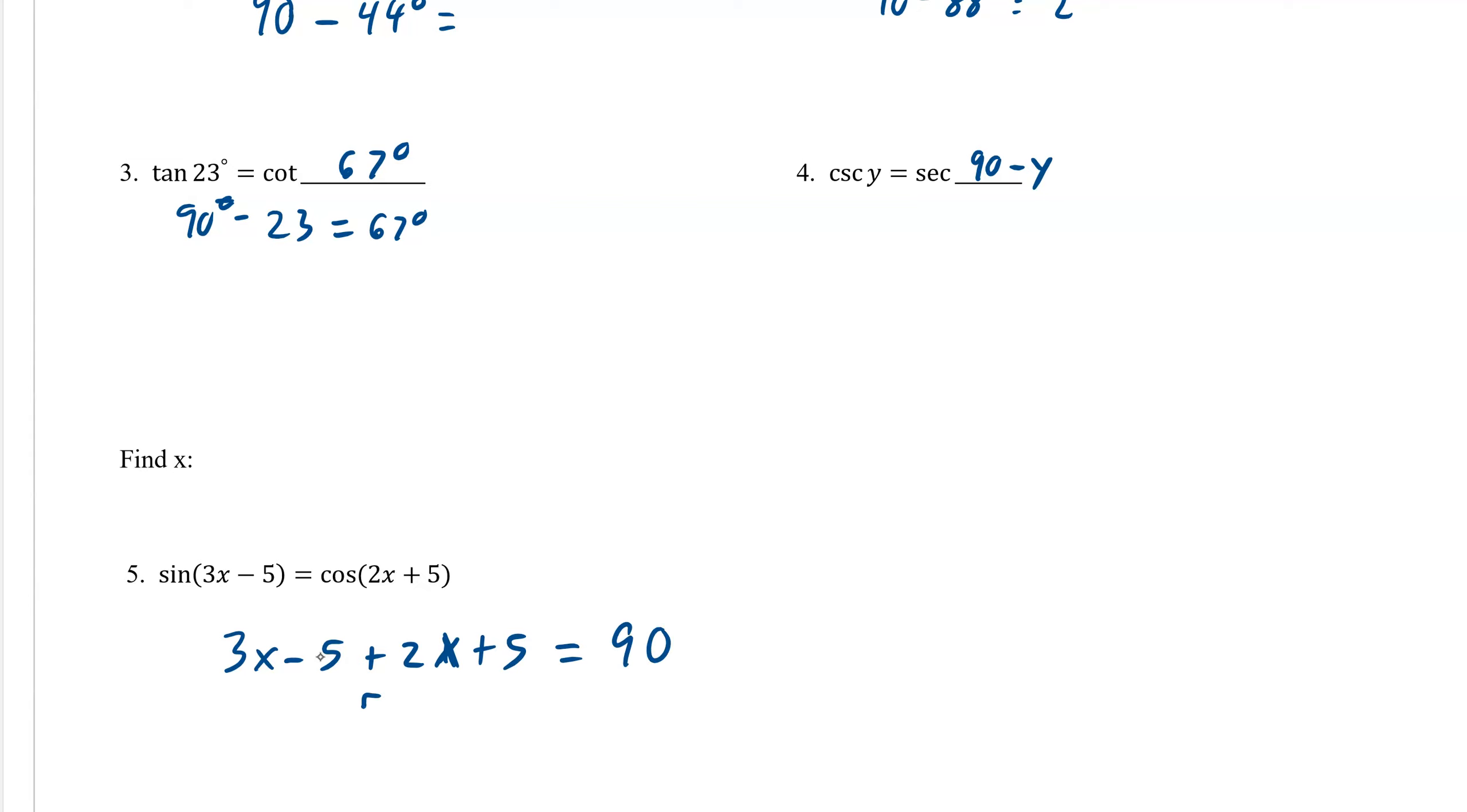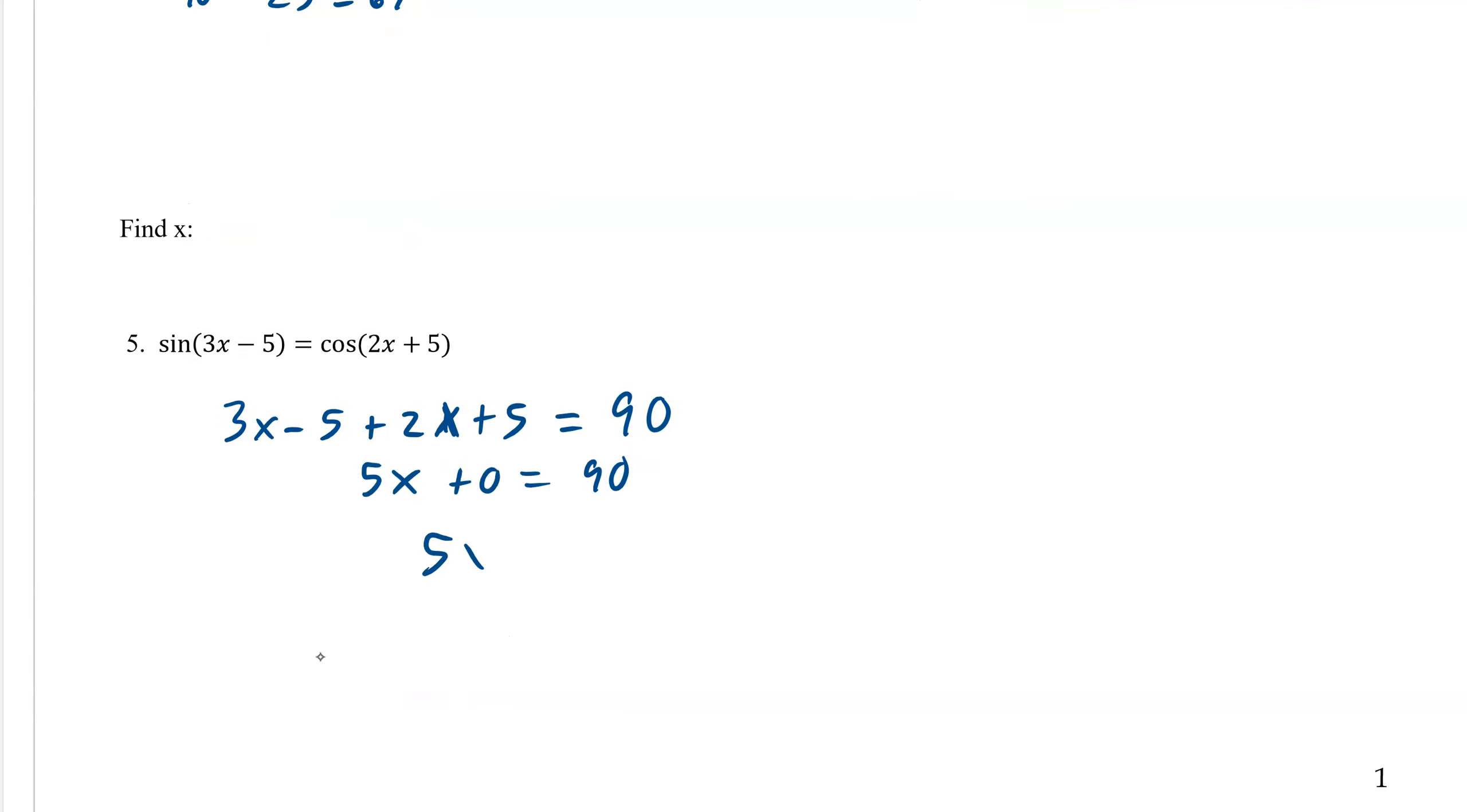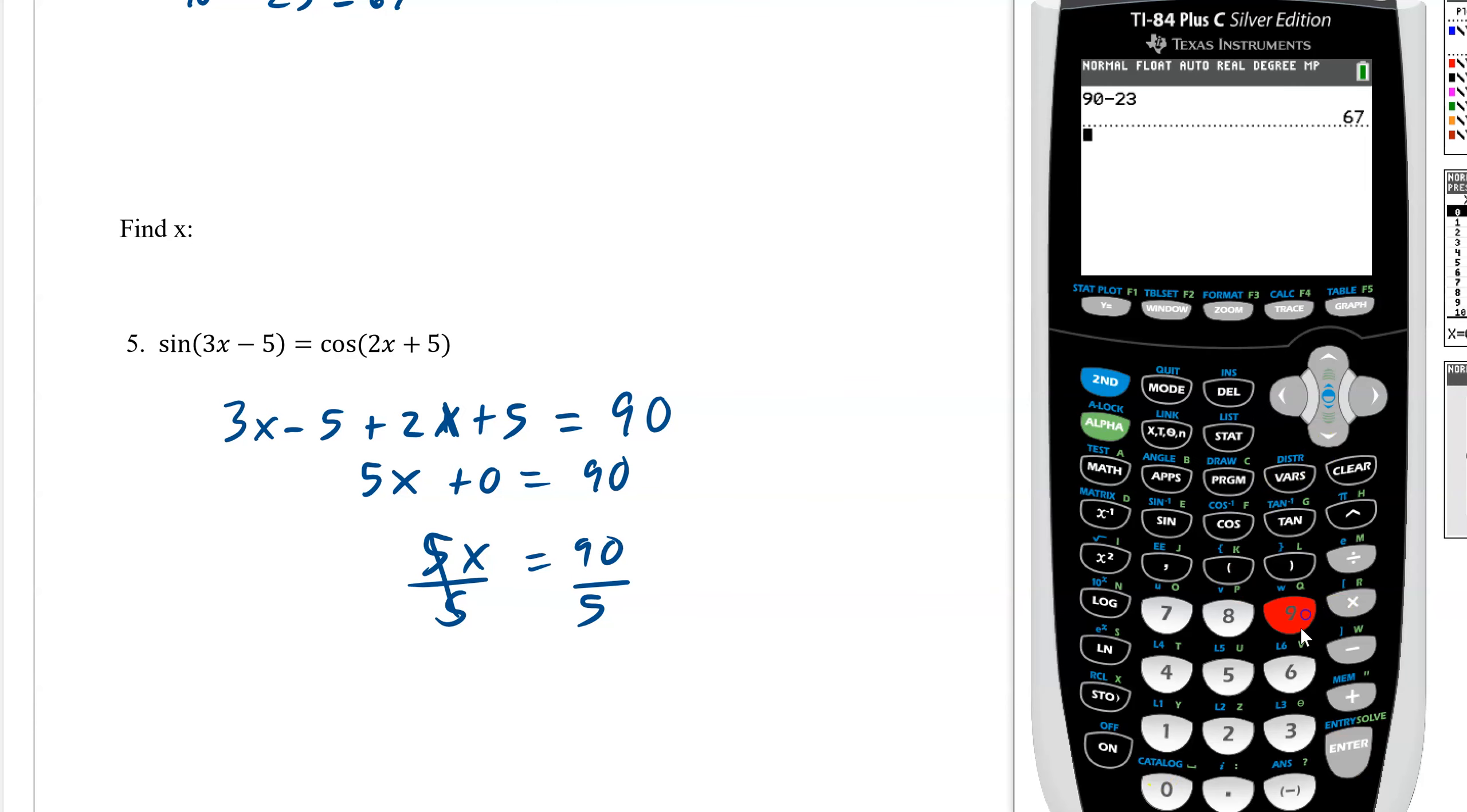So if we take 2x and 3x, that's 5x plus 0 equals 90. And so this is 5x equals 90 divided by 5, divided by 5. So 90 divided by 5 is 18.